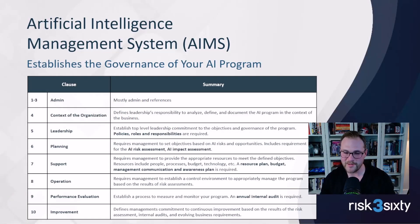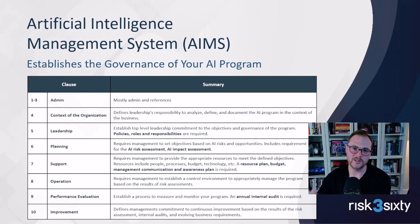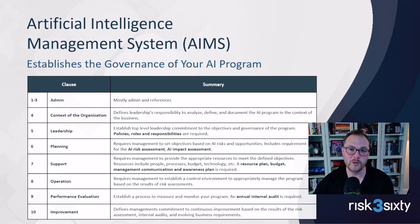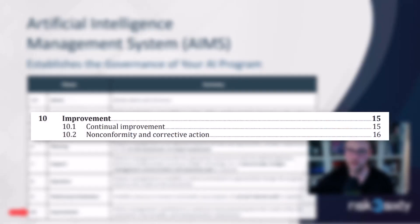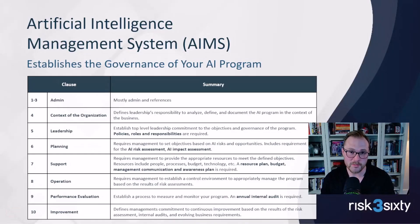Clause ten ties it all together: you've established context, committed leadership, created a plan, applied resources, and have a performance evaluation process with inputs on areas for improvement. Clause ten is management's commitment to improve — acting on risks, audit results, and the evolving AI landscape to continuously improve. The overall governance of your management system must be documented as its own document, and you must prove you're acting on it to your external auditor.